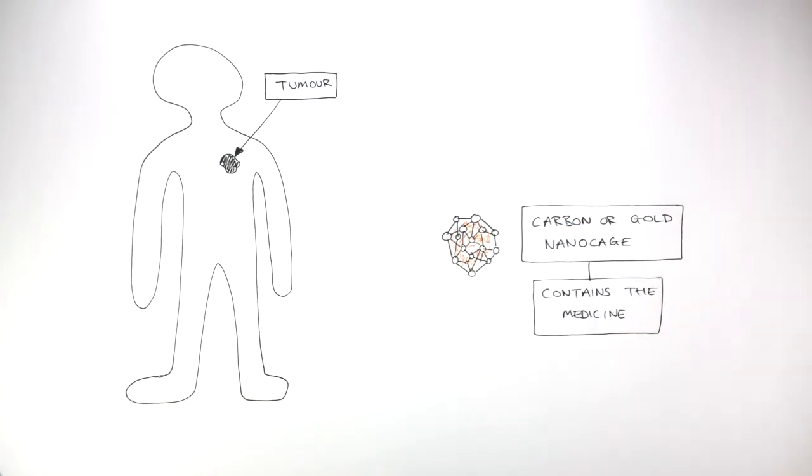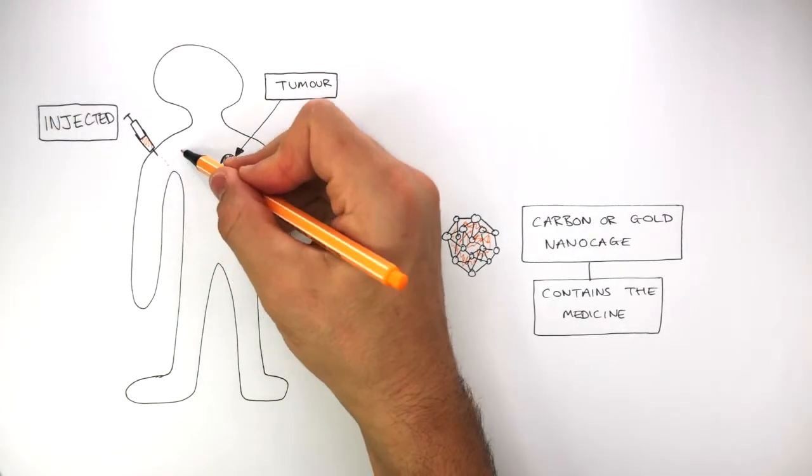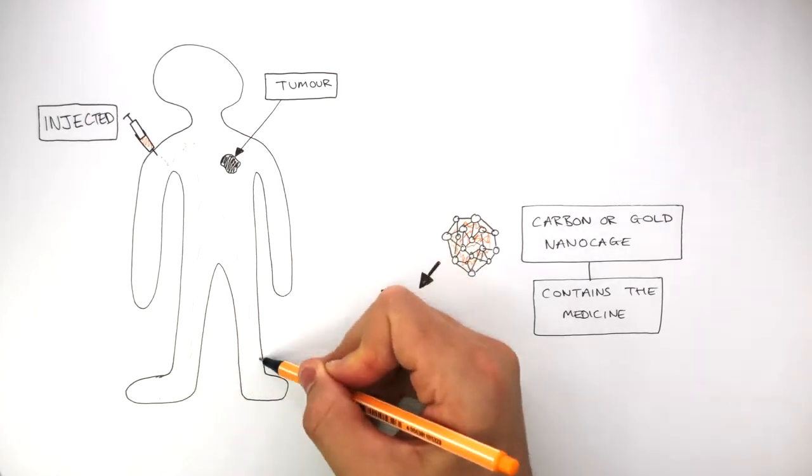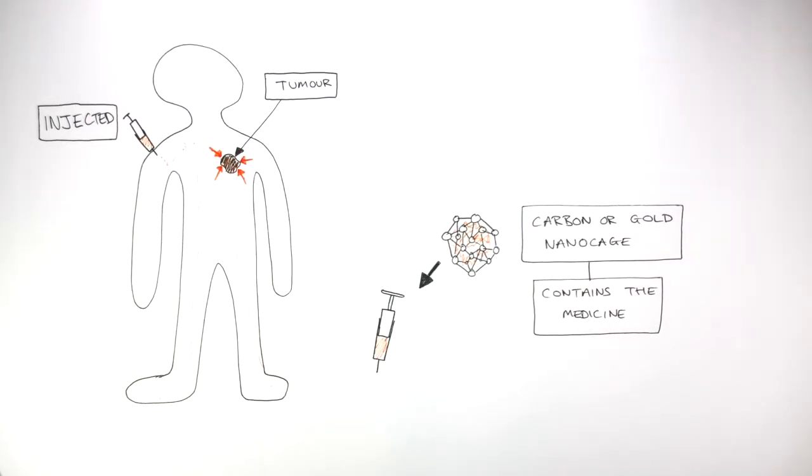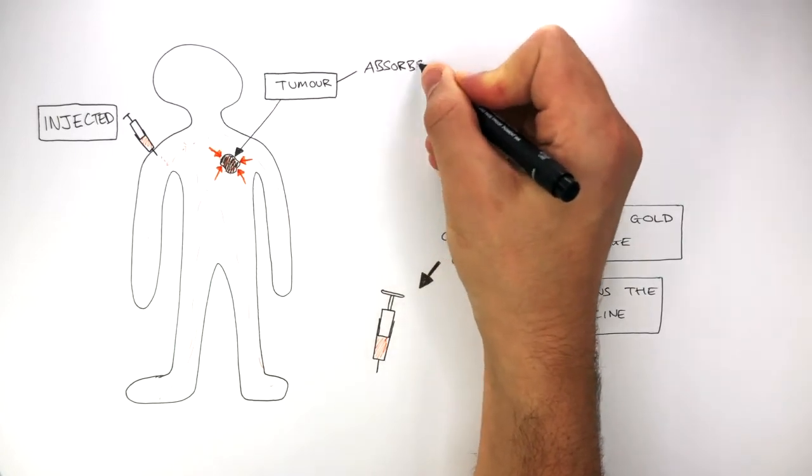These carbon or gold nanocages are put into a syringe where the person is then injected. When the syringe is injected in the person, the medicine inside the nanocages travels through the body, where these nanocages are then absorbed by the tumour.